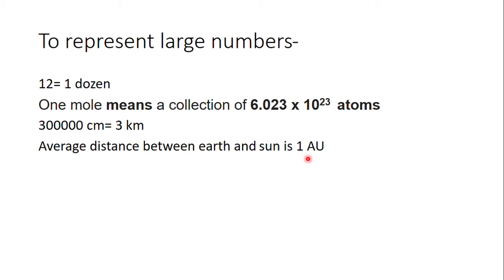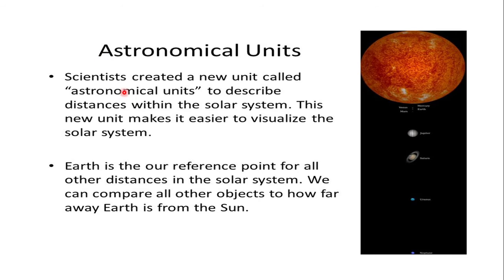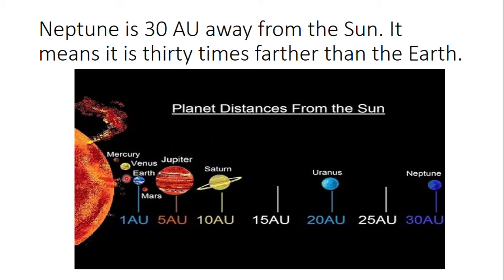1 AU or 1 astronomical unit is the average distance between the earth and the sun. It was created by scientists to describe distances within our solar system. This unit helps us visualise other planets — for example, if the earth-sun distance is 1 AU, then Jupiter is 5 AU from the sun, meaning it is 5 times farther than the earth.